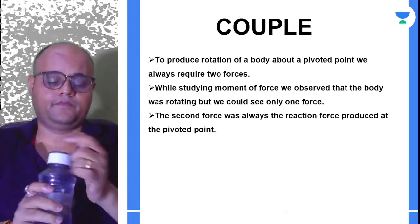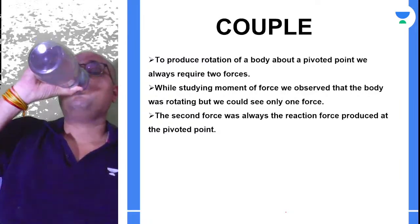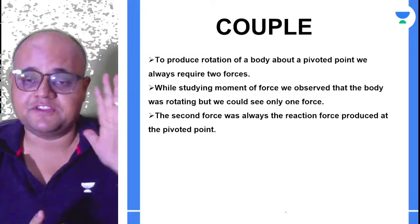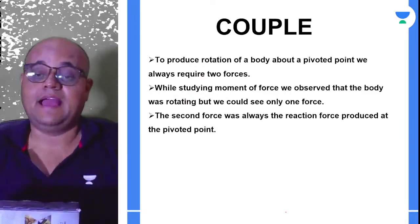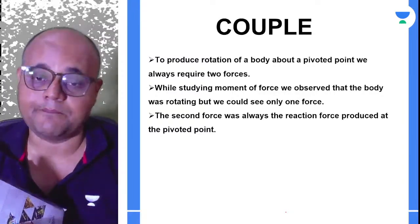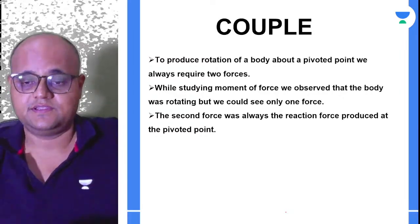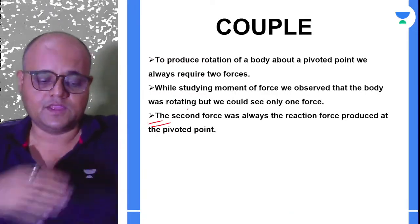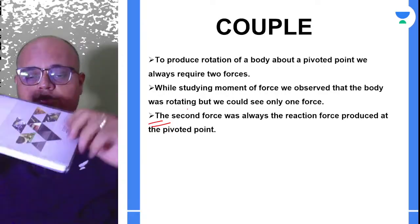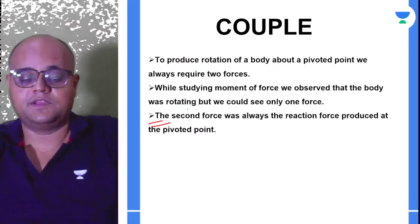Now let's see what a couple is. Suppose you have to rotate a body about a fixed point. Normally, for rotating a body we require two equal and opposite forces. You can see this with the example of a door — when you open a door there is one more force involved. This is how the rotation of a body is possible — without two forces, the rotation is not possible.